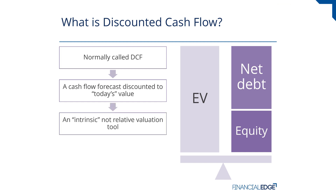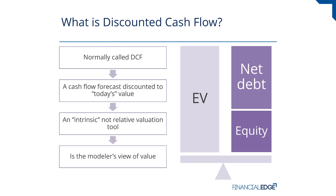A DCF is an intrinsic, not a relative, valuation tool. A relative valuation tool looks at similar companies, sees what they're worth, finds some ratios, and applies them to our company. A discounted cash flow instead says: I want to find out the revenues of my company, its costs, all of its cash flows; I then find the cost of this company's finance and then find the value — very much looking internally.